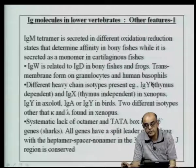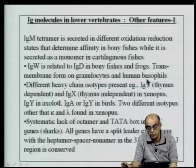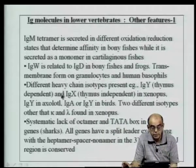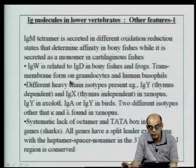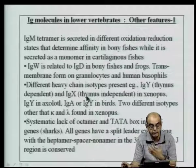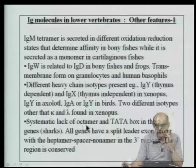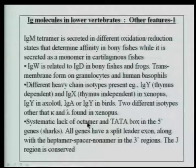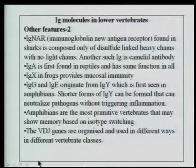Similarly, there are molecules without a light chain — a two heavy chain-containing molecule called IgY — present in Xenopus, supposed to be thymus-dependent, and IgX, the forerunner for IgA, supposed to be a thymus-independent antigen. In sharks, there is a systematic lack of octamer motifs related to immunoglobulin gene rearrangement. The J region is conserved and does not have different kinds of gene segments during immunoglobulin gene rearrangement.